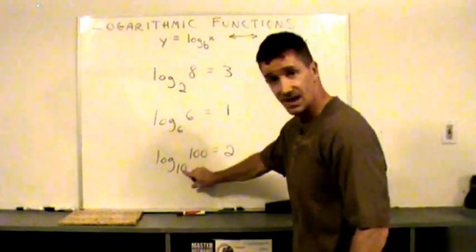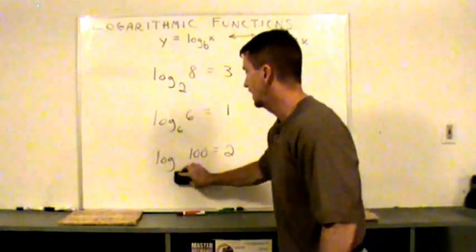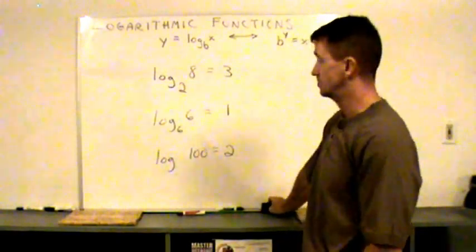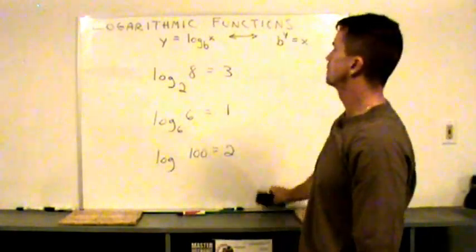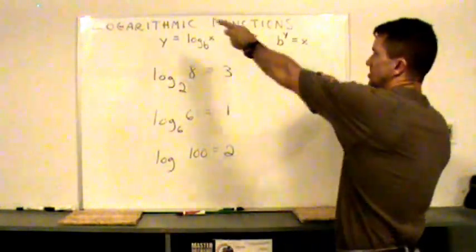Log base 10 of 100 equals some number, some value. Well, is it 10 to the second power equal to 100? This would be a two. And everyone, because that's a 10, that may be invisible. You might not see that. So log of 100 is two. That gives you an idea of this relationship here.